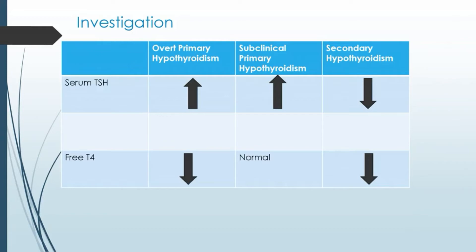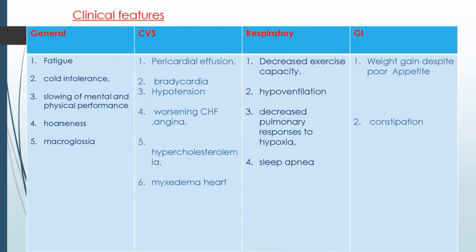Investigation: In overt primary hypothyroidism, serum TSH is increased and free T4 is decreased. In subclinical primary hypothyroidism, serum TSH is increased but free T4 is normal. In secondary hypothyroidism, serum TSH is decreased and free T4 is also decreased.